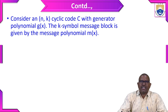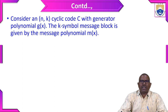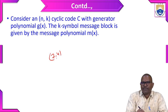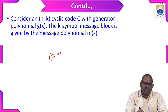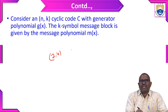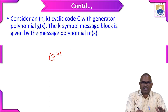We are considering an (n, k) cyclic code C with generator polynomial g(x) and the k-symbol message block given by the message polynomial m(x). Here n is the length of the code and k is the size of the message — for example, a 7 comma 4 code. The message polynomial m(x), generator polynomial g(x), and the generated cyclic code are all in polynomial form. Whereas block codes are in matrix form, cyclic codes are in polynomial form — that is the difference.